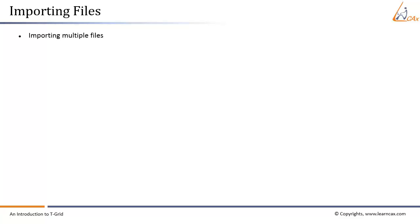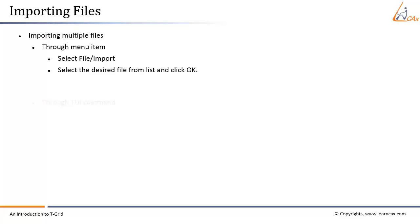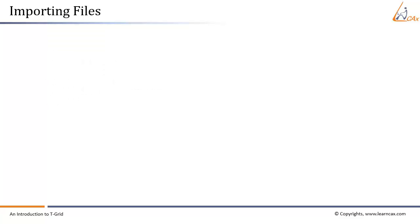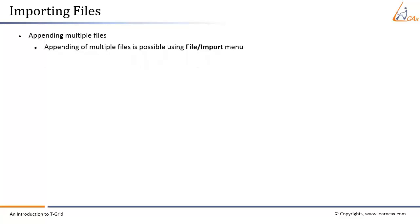T-Grid enables importing multiple files at a time. To do this, use the File Import menu, select the desired file from the list, and click OK. You can also use the appropriate TUI command, for example 'file import ansys surf-mesh', and specify the names of the files to be imported. Appending multiple files is also possible using the File Import menu and enabling 'Append Files' in the select file dialog box.